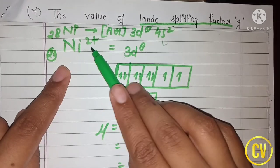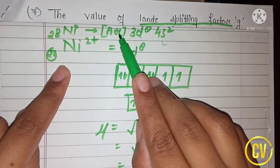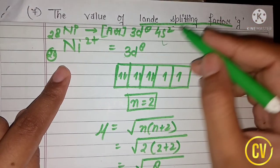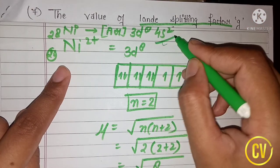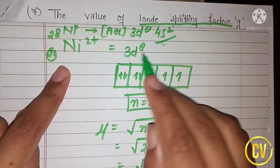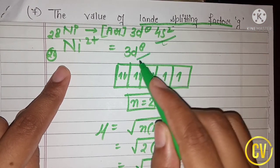For Ni²⁺, that means two electrons will be lost. After losing the two 4s electrons, we are left with the 3d⁸ configuration.